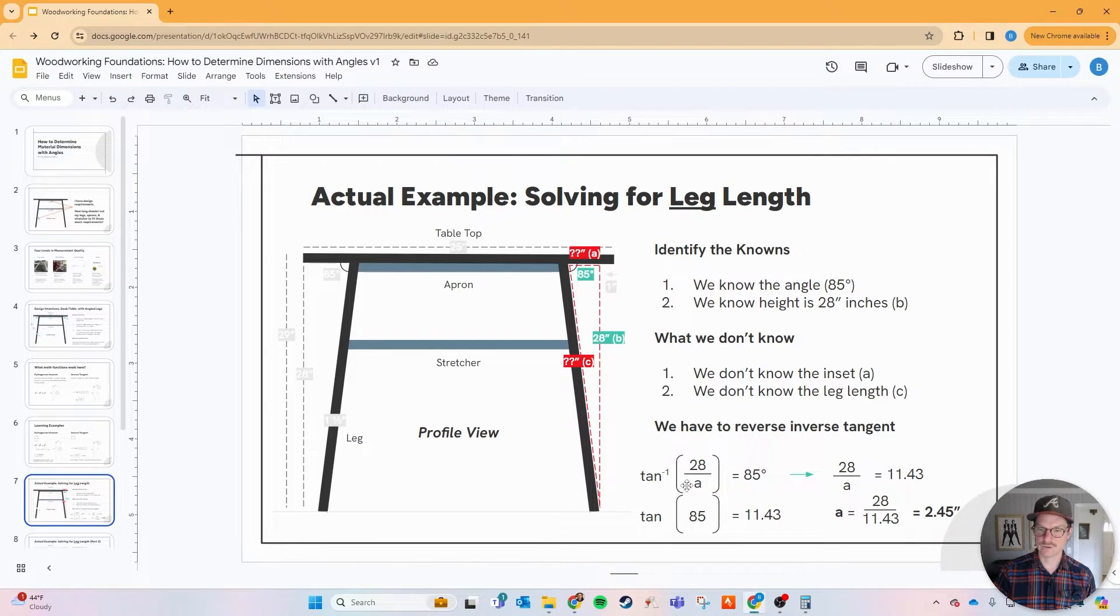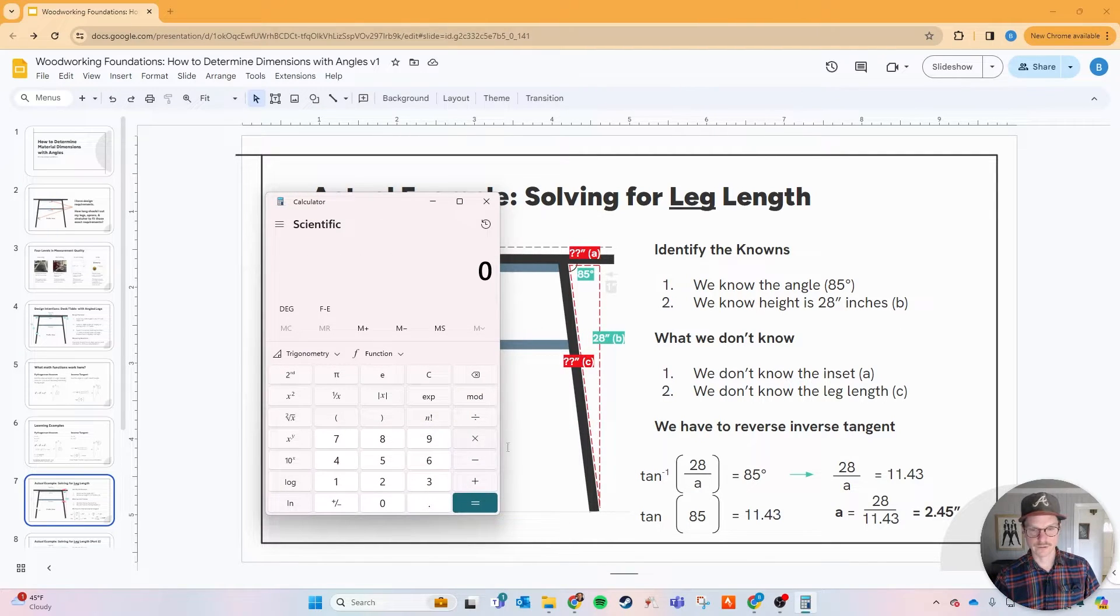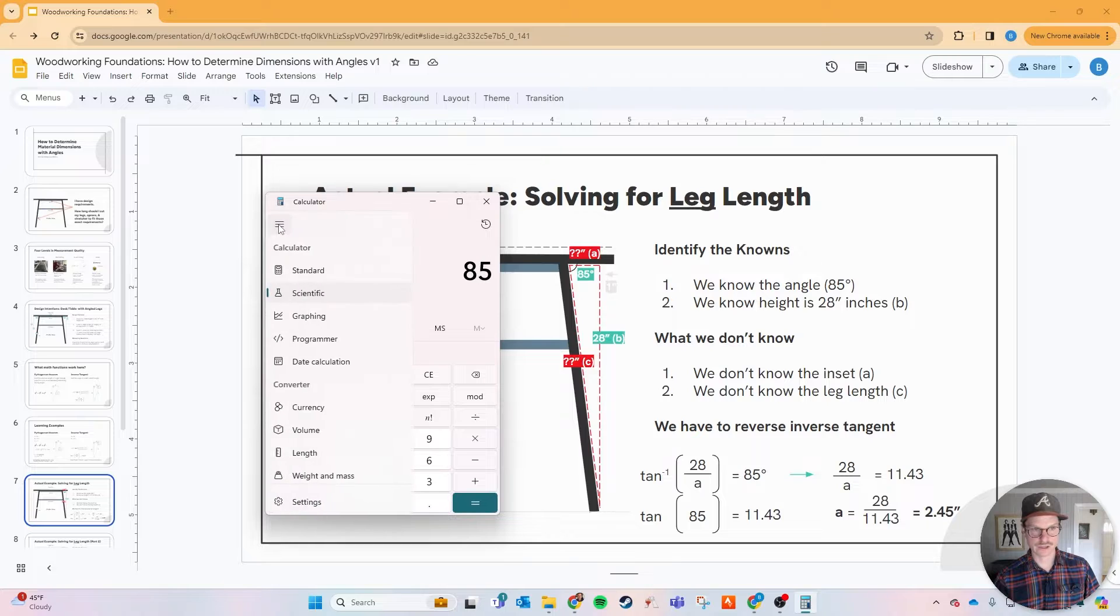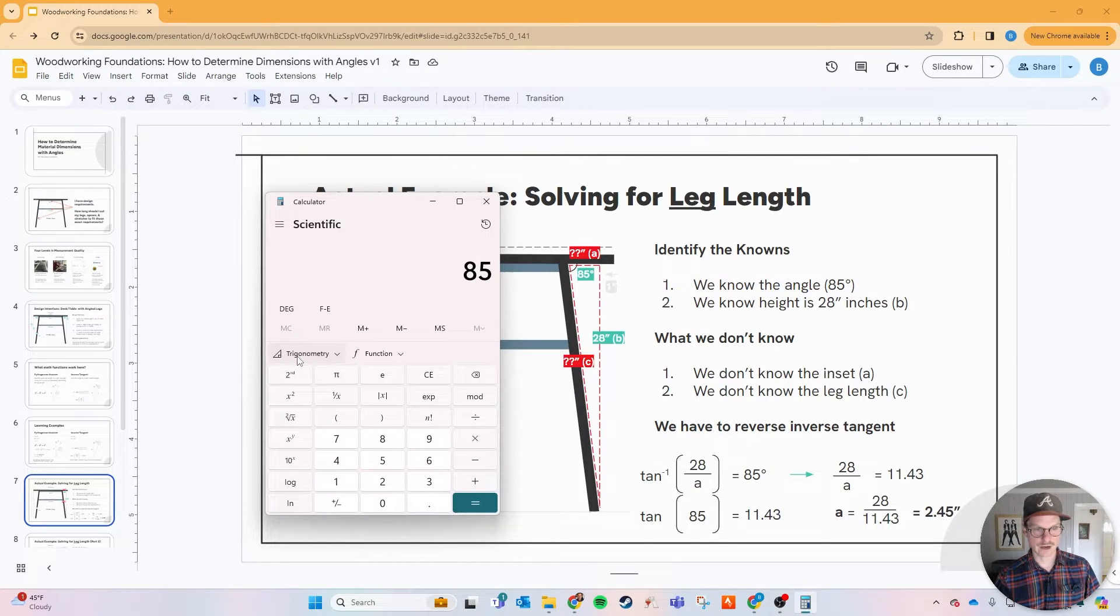In inverse tangent we know that opposite over adjacent gets us that angle, but we don't have the adjacent right here, so we have to reverse the inverse of tangent. We know 85 degrees, so let's inverse that. Inverse of tangent 85 is 11.43. So 11.43 equals 28 inches over a that we don't know, so let's solve for a. 28 over 11.43 equals 2.45 inches. Now let's do this with a calculator. If we do 85, by the way change your calculator to scientific, hit this trigonometry function here, hit tangent, you can see the 11.43. Now we need to solve for a. 28 divided by 11.43 equals 2.45.